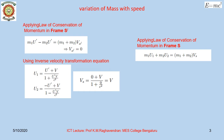Now let us consider the collision from the point of view of the observer in the frame S. By using the inverse Lorentz transformation, we can obtain the velocities of the two bodies before collision as seen from frame S: U1 equal to (U' + V) divided by (1 + U'V/C²), and U2 equal to (−U' + V) divided by (1 − U'V/C²). The velocity of the coalesced body will be Vs equal to (0 + V) divided by (1 + 0/C²), which equals V itself — that is, the velocity of the frame.